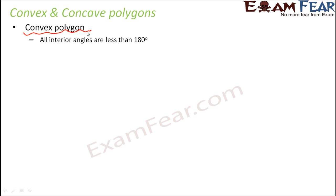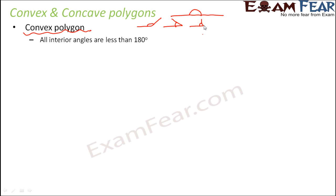Convex polygons are those whose interior angles are all less than 180 degrees. Now, 180 degrees is a straight angle. So when we say anything less than 180 degrees, it could be something like this, or like this, or like this — these angles are all less than 180 degrees.